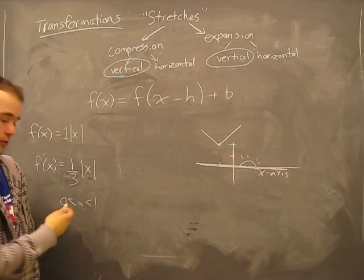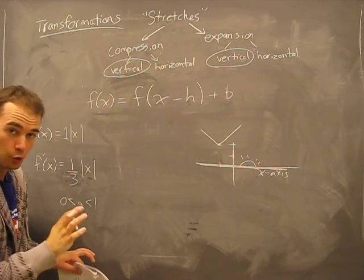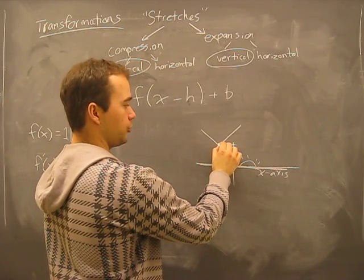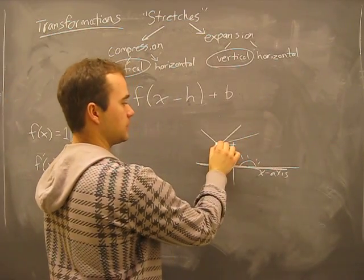If we have one-third, so this number is between 0 and 1, notebook, your slope is one-third. Watch what happens to the graph.